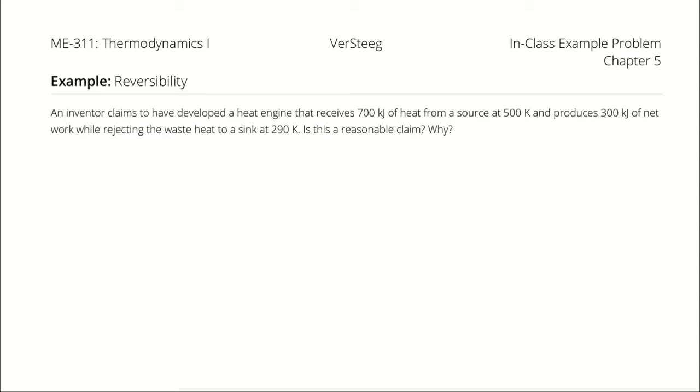An inventor claims to have developed a heat engine which receives 700 kilojoules of heat from a source at 500 Kelvin, and produces 300 kilojoules of net work while rejecting the waste heat to a sink at 290 Kelvin. Is this a reasonable claim? Why or why not?